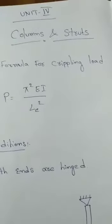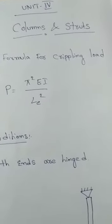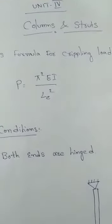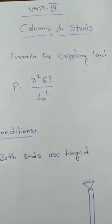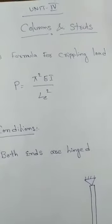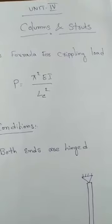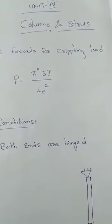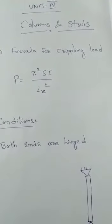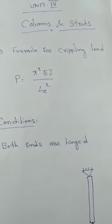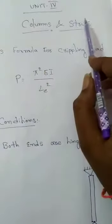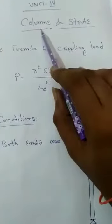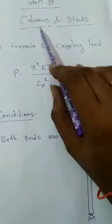Hi students, I am Vinod from the Department of Civil Engineering. This is for Strength of Materials 2 for second year BTEC second semester students. In the previous topic we already discussed what is a column, what is a strut, and what are the different kinds of columns and the different failures that occur in a column.